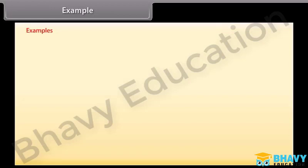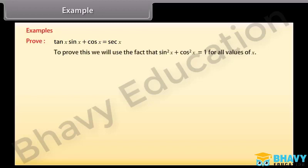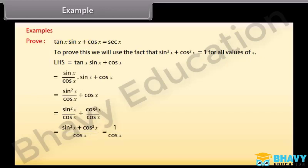Example 1. Let's now solve some examples related to trigonometric identities. Prove that tan x · sin x + cos x is equal to sec x. To prove this, we use the fact that sin squared x plus cos squared x is equal to 1 for all values of x. Solving the left-hand side, tan x · sin x + cos x, we get sec x, which equals the right-hand side. Hence, tan x · sin x + cos x is equal to sec x.